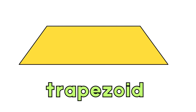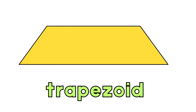This is a trapezoid. Can you say trapezoid? A trapezoid has one pair of parallel sides. Say it with me: trapezoid.